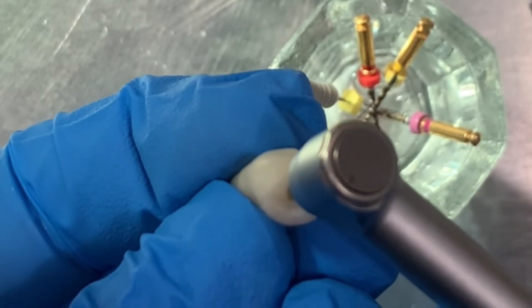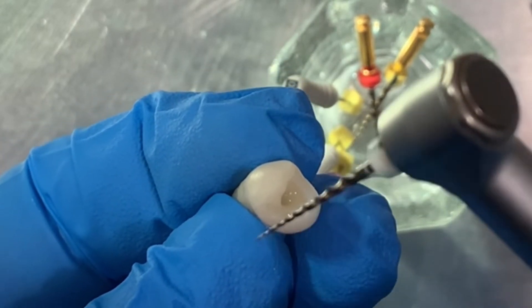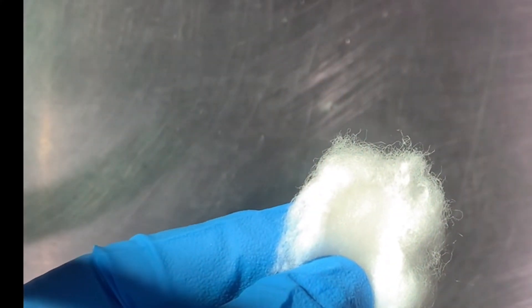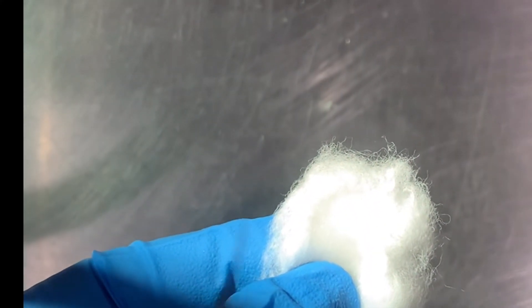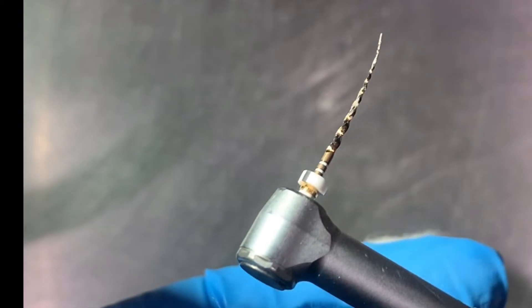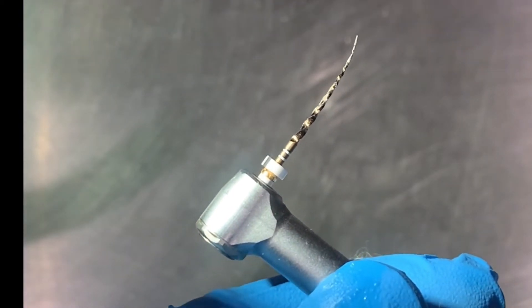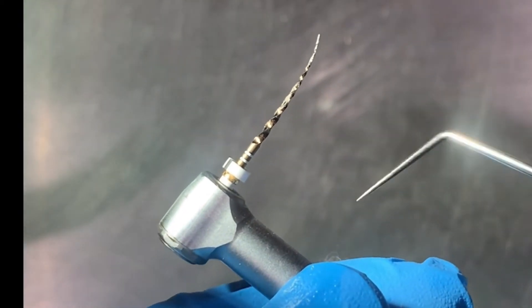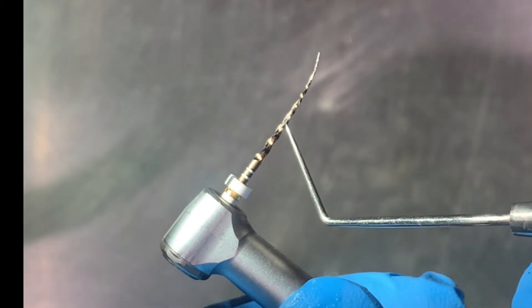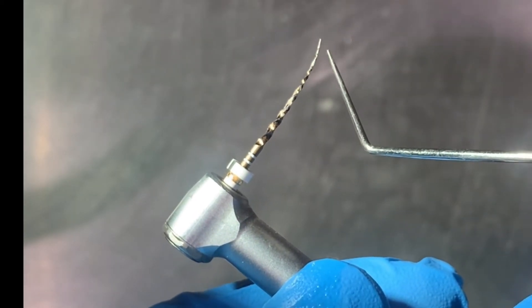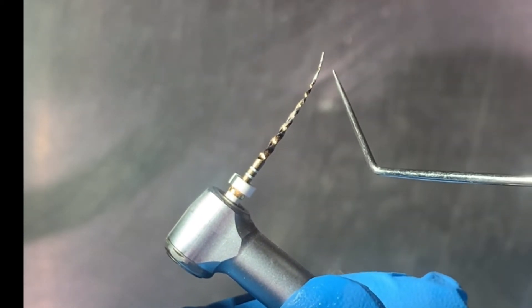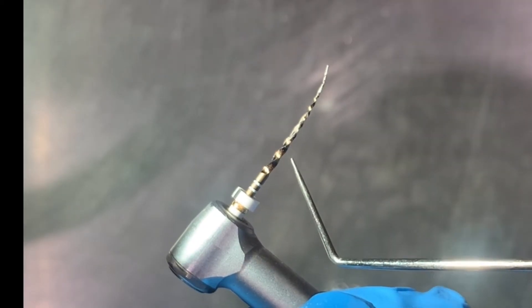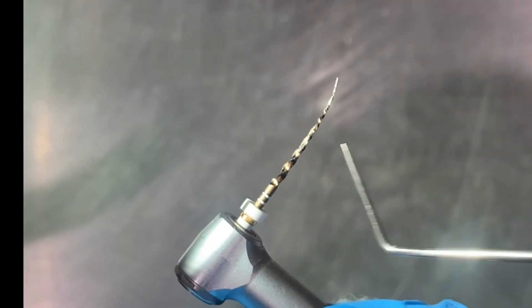Before I clean the file, I would like to show you the debris present on the file. This debris indicates that active cutting has taken place in the canal. It is present all along the file right in the apical area, however maximum debris is present in the middle one-third area.